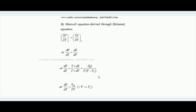By Maxwell's equation derived through Helmholtz's equation: (∂P/∂T) at constant V equals (∂S/∂V) at constant T. I will not go into the details of how this formula is derived — there is another lecture in this channel covering the Maxwell equation. Proceeding with this expression: dP/dT at constant volume equals dS/dV at constant temperature.